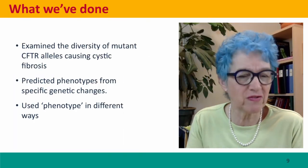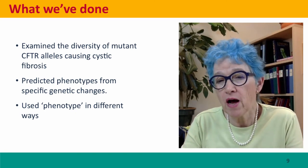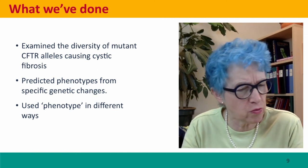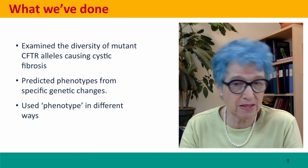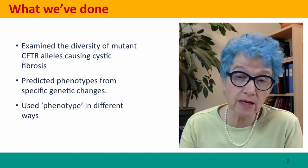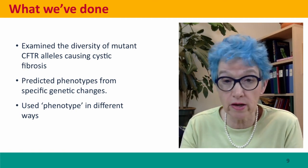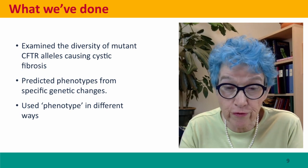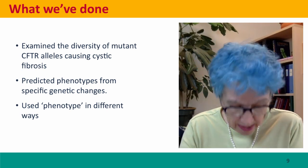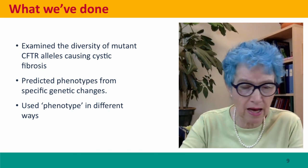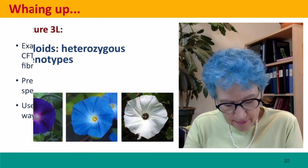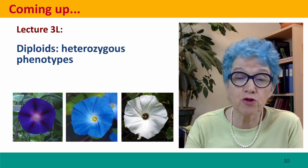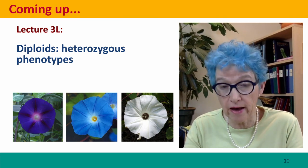So what have we done? We spent a whole lecture thinking about the diversity of mutant alleles in one gene, the cystic fibrosis transmembrane regulator, and we thought about phenotype in different contexts: the phenotype as messenger RNA, the phenotype as how much protein was produced, the phenotype as fertility, and the phenotype as lifespan. We could have talked about many other aspects of phenotype caused by changes in CFTR — for instance, your ability to digest your food is very dependent on the function of this protein. Coming up next, we're going to take the big step from thinking about homozygous genotypes to thinking about heterozygous genotypes and the effects that they have on phenotype.